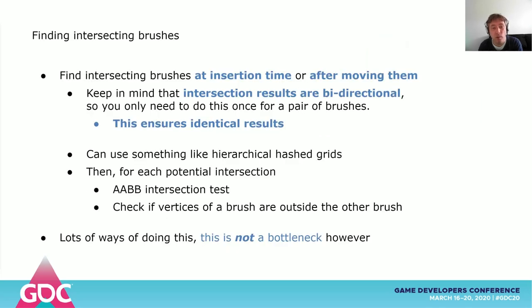The first thing we want to do is find all brushes that touch our brush. We can simply do this the moment we add a brush and store this, or update this information after a brush moves. Keep in mind that when you determine if two brushes intersect, you can use this information for both brushes — if A and B intersect, it's the same as B and A intersecting. There's no point in duplicating our work here. You could use an acceleration data structure like hierarchical hashed grids to find the most likely brushes you might intersect with, then do a simple axis-aligned bounding box test and check if vertices of one brush are outside the planes of the other brush. This is not a bottleneck and I wouldn't try to be too smart about this part.